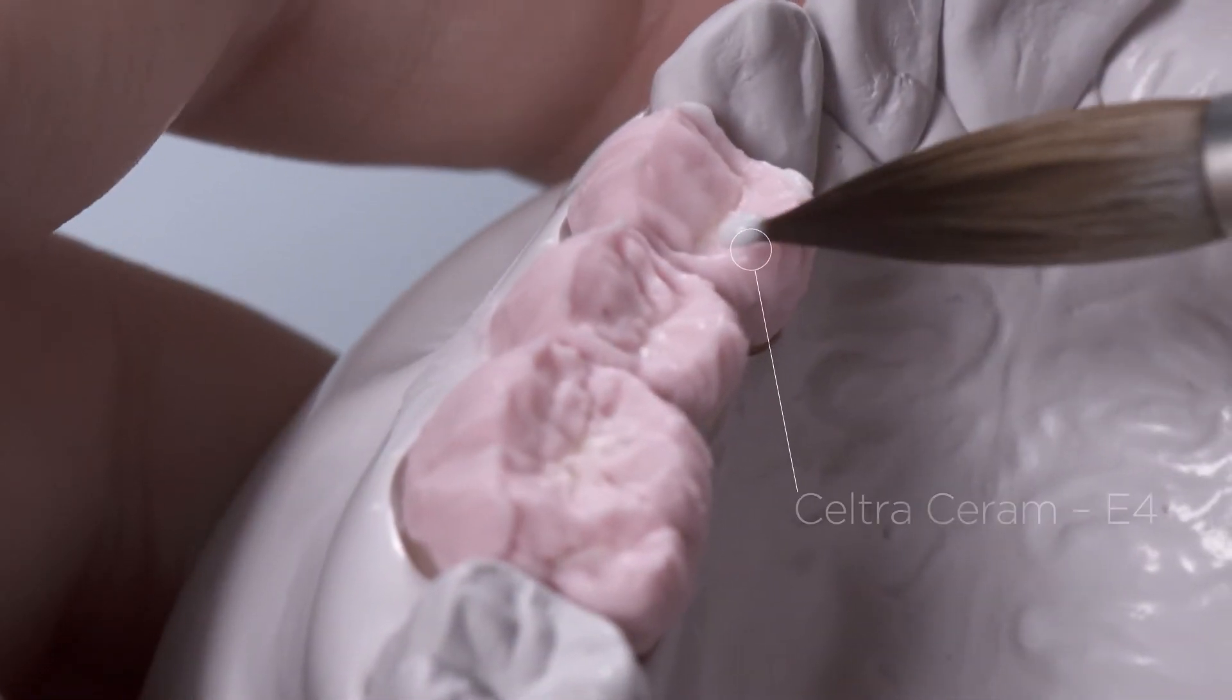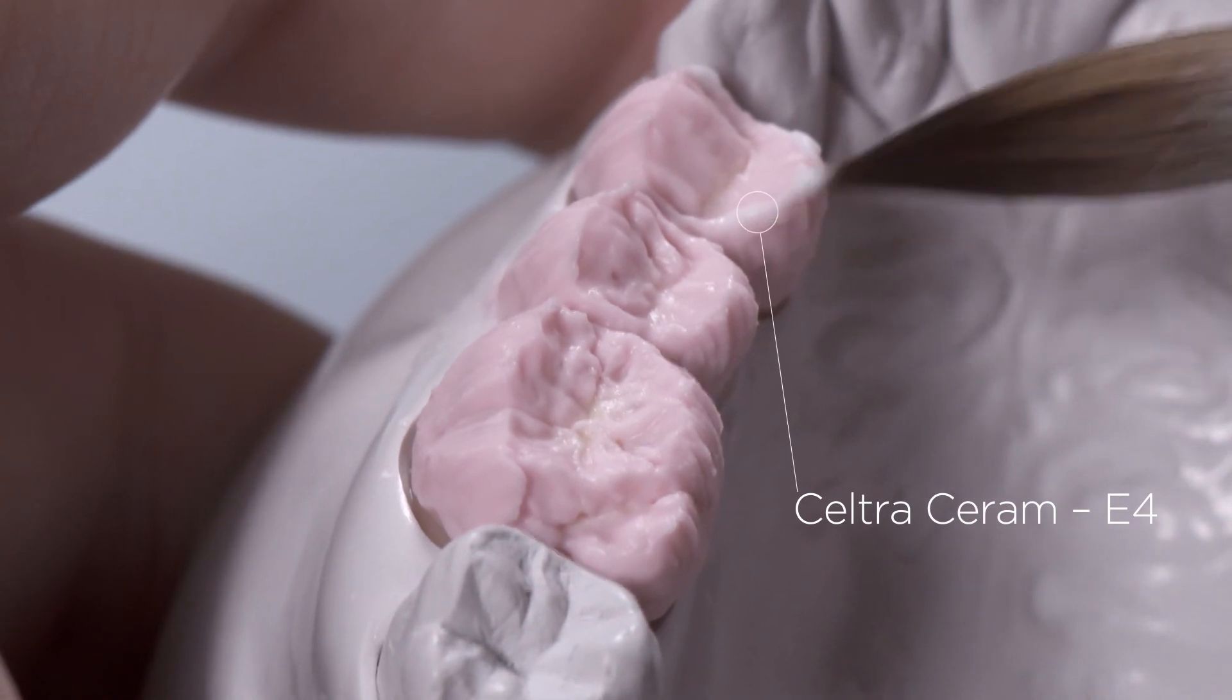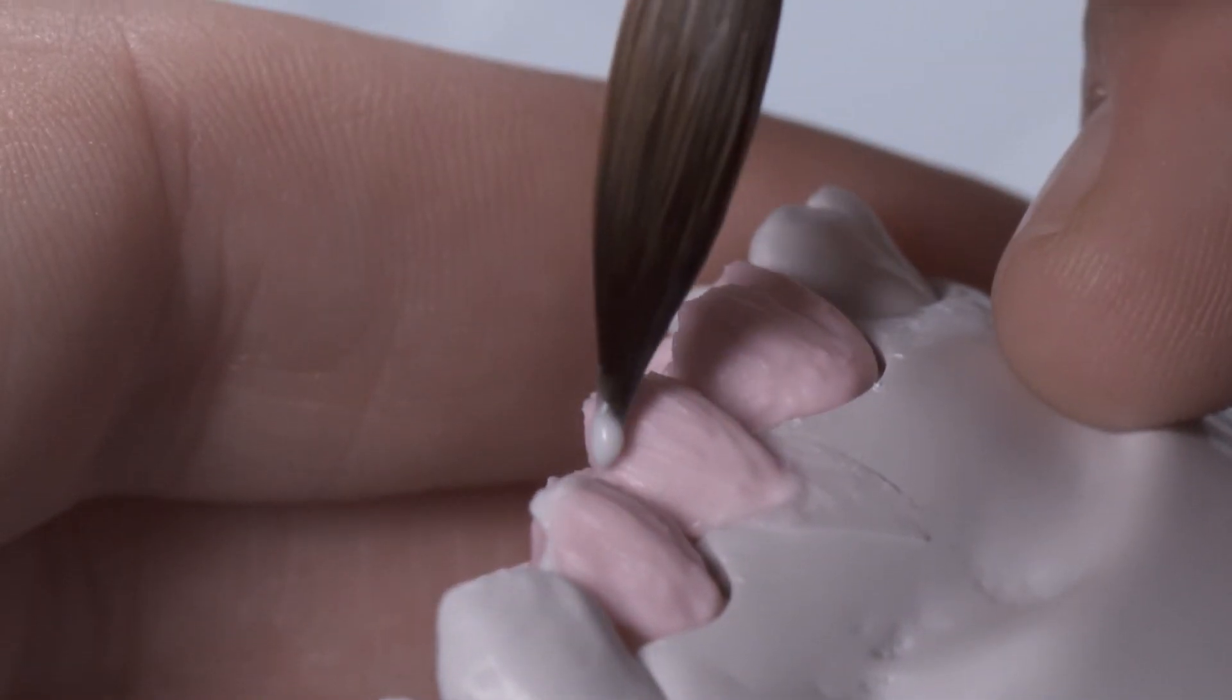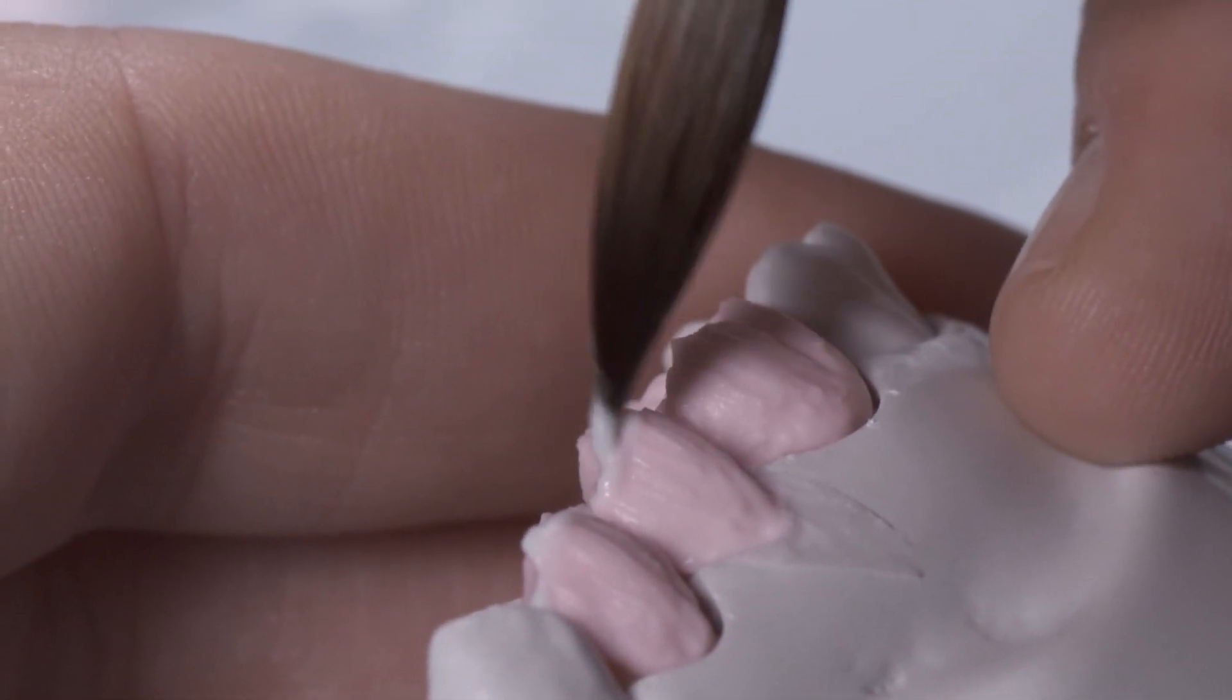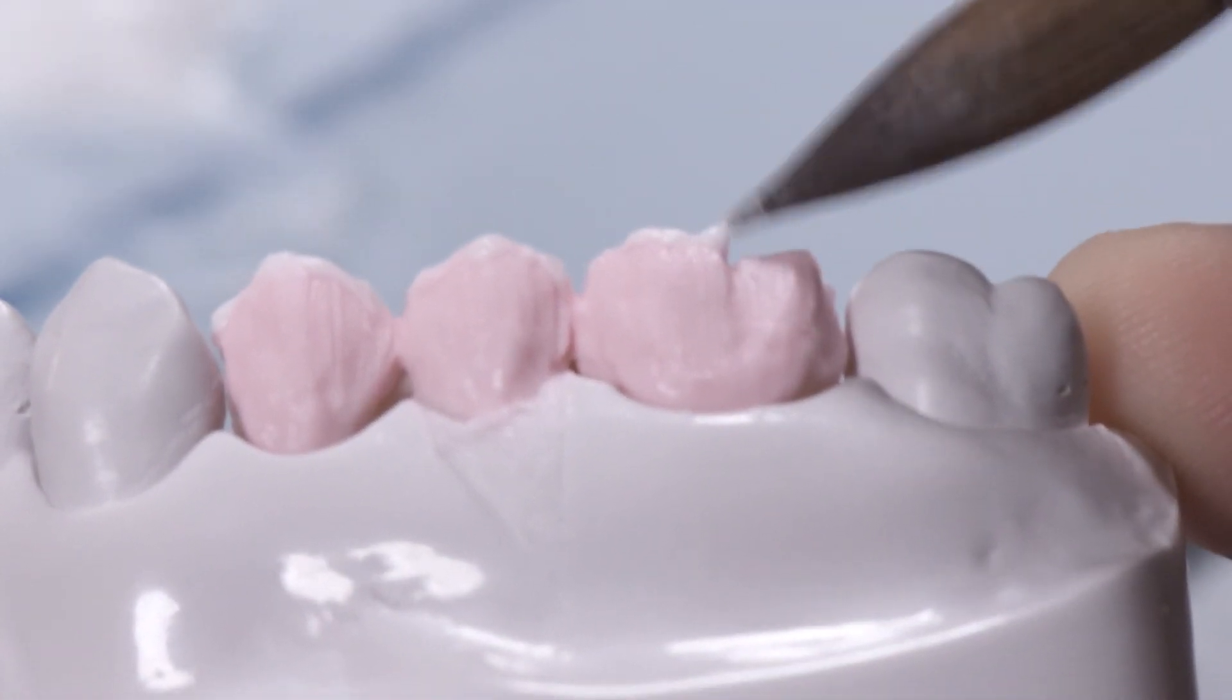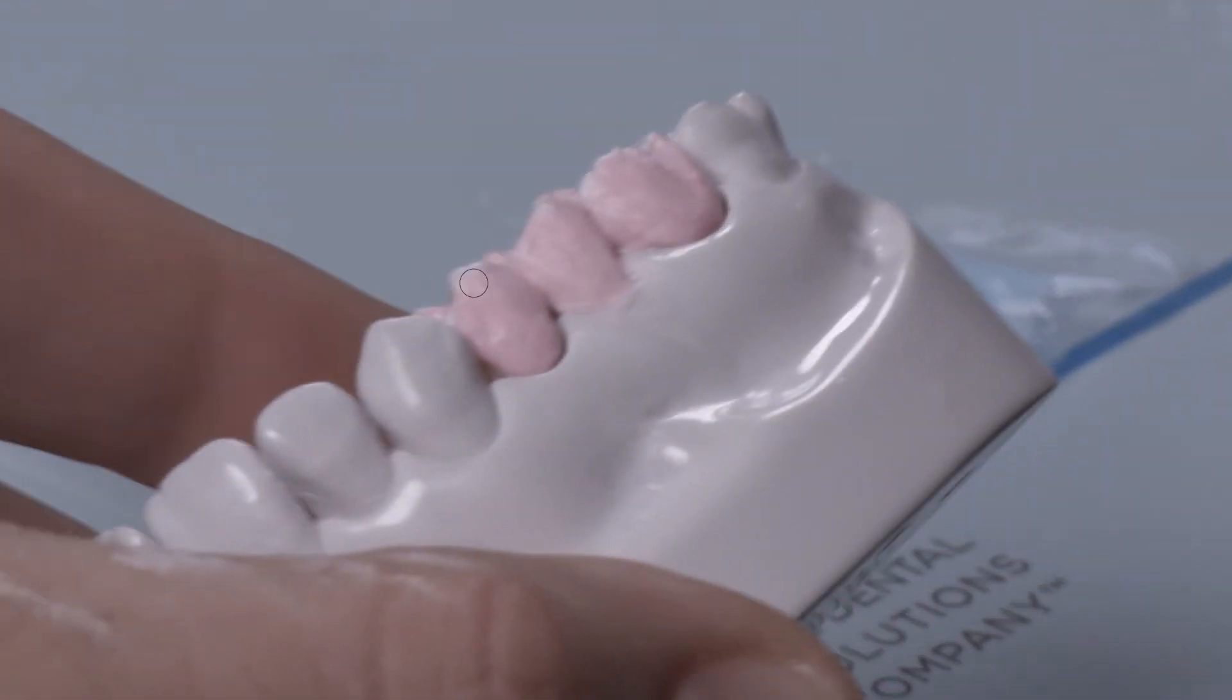The ridges of the occlusal surfaces are emphasized with Seltra Ceram Enamel E4. This makes the occlusal surfaces appear extra vivid in the most translucent areas. Complete the build up with Enamel E1.